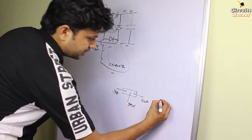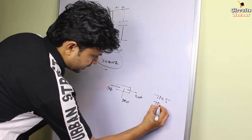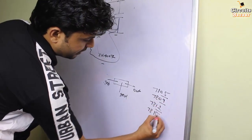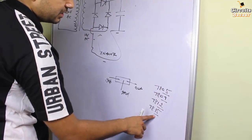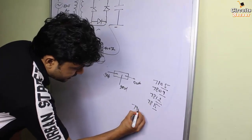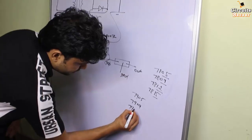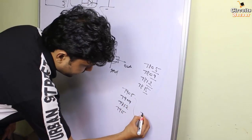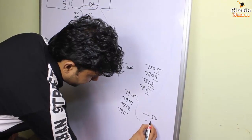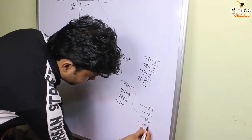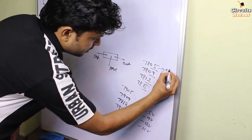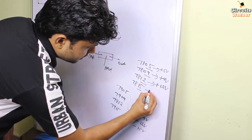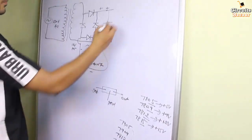There are many voltage regulators available: 7805, 7809, 7812, 7815. The last digits — 5, 9, 12, 15 — denote the output voltage. For extra knowledge, there are also 7905, 7909, 7912, 7915, which provide negative voltages: negative 5 volt, negative 9 volt, negative 12 volt, negative 15 volt. The 78xx series provides positive voltages: plus 5 volt, plus 9 volt, plus 12 volt, plus 15 volt.